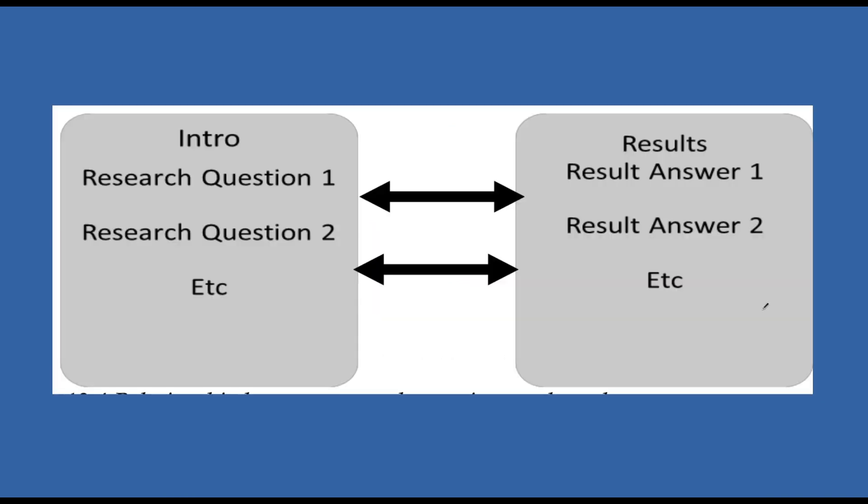Now, generally, what I found that works the best in the past is you answer your questions in your results section in the order that you presented the questions in your review of literature introduction. So whatever was question one, you answer that first. Whatever was question two, you answer that second, et cetera. This helps to maintain continuity in your paper.